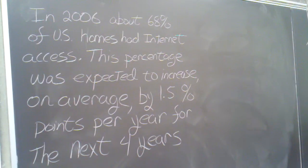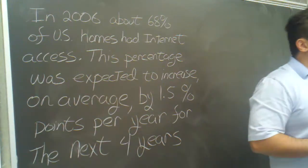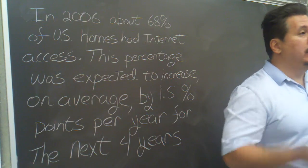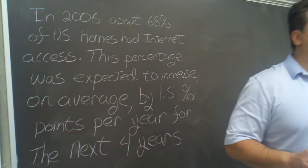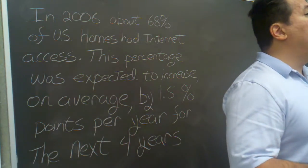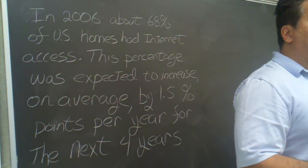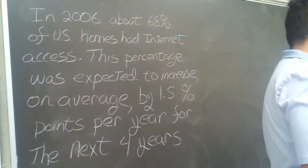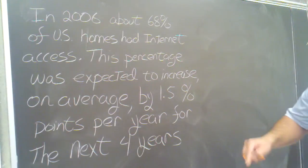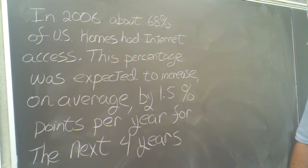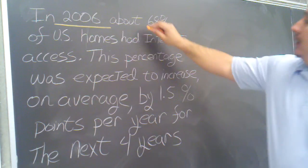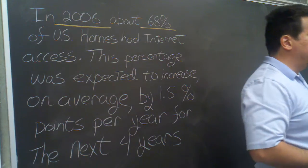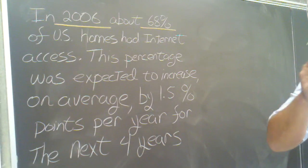Here's our situation. When I read this word problem, I'm looking for two things: a possible output variable and a possible input variable. Anytime we're talking about a mathematical relationship, we're talking about how one value changes, and that change is caused by another value. Notice the very first line: in 2006, about 68% of U.S. homes have internet access. There are two values — 2006 and 68% — a possible input and output situation.